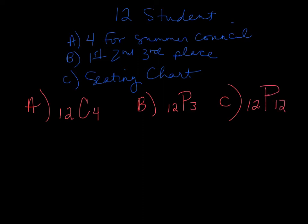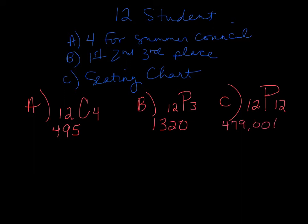Just to carry over the answers from the last problem: part A, the combination, we got an answer of 495. Part B, we got an answer of 1,320. And part C, the seating chart, that answer was 479,001,600. So let's do these on a calculator and see if we get the same answers.